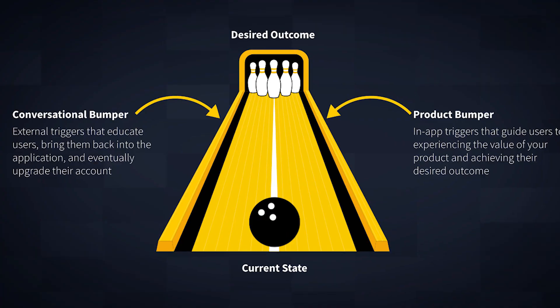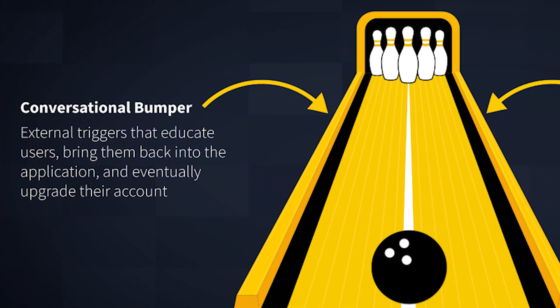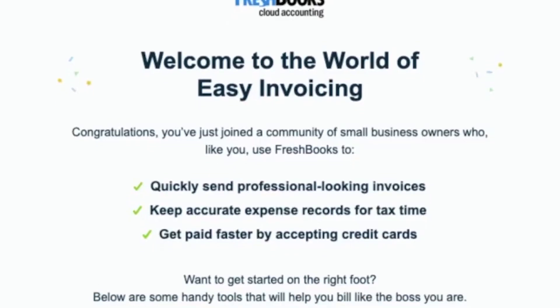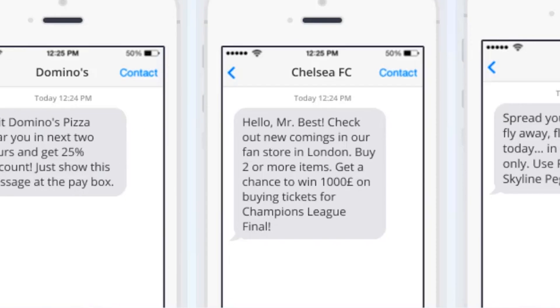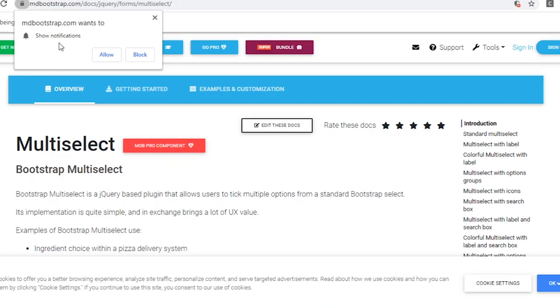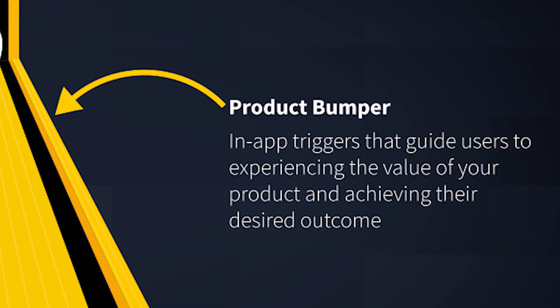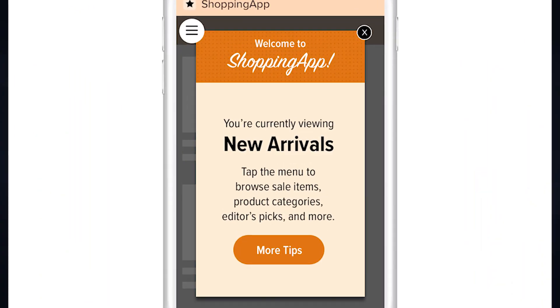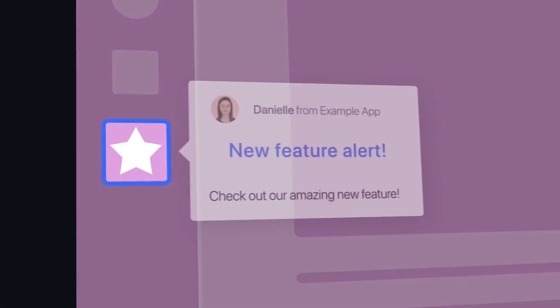And when it comes to user onboarding, bumpers help new users achieve their first strike. Bumpers include conversational triggers such as onboarding emails, SMS, and browser notifications, and in-app triggers such as welcome messages, product tours, and progress bars. I'll be covering these bumpers more in another video.